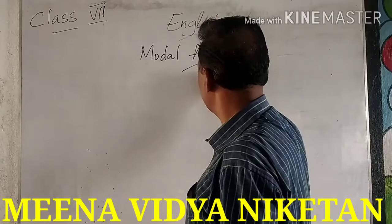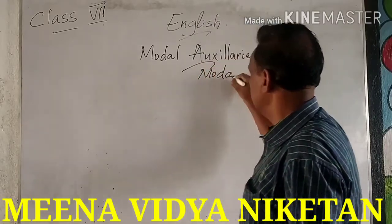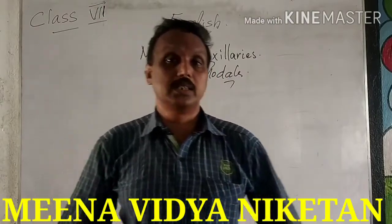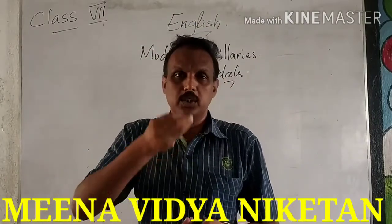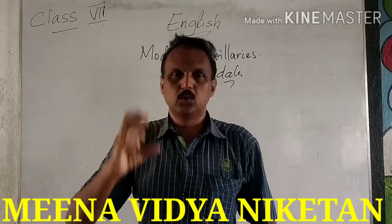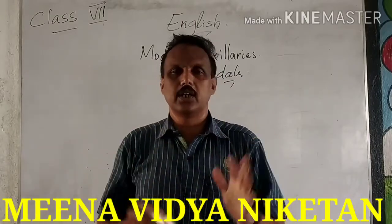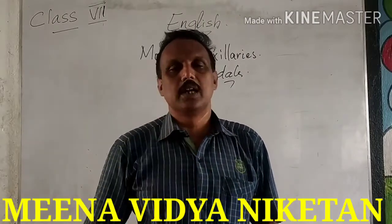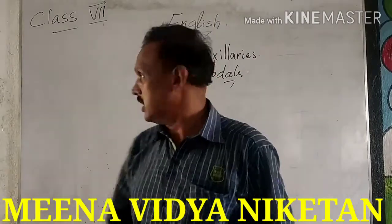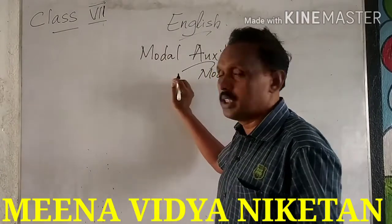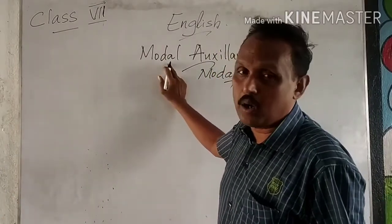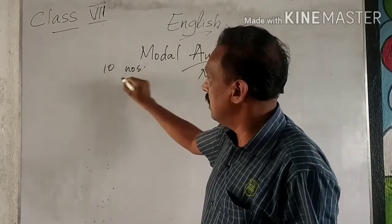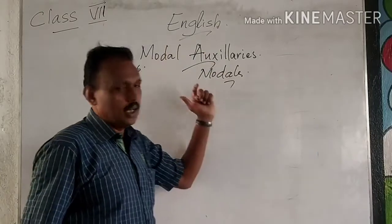Modals are supporting verbs. A regular verb shows an action — like 'eat' shows a particular action. But modals do not have that action. They are very important because a verb is a must in a sentence, and modals support it. They are called auxiliary verbs. In this list of modals, there are 10 modals out of 17 auxiliaries total.